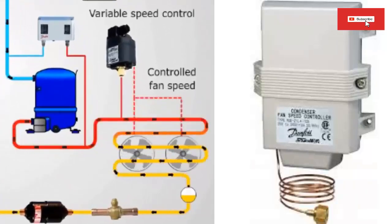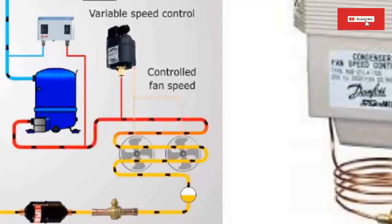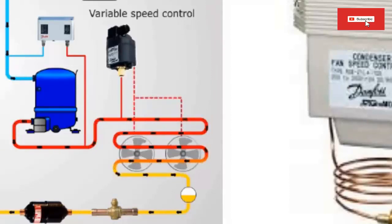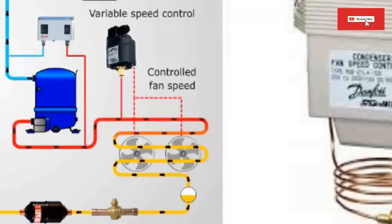Variable Speed Control, or VSC, is a technology that can be used to improve the efficiency and performance of condenser fans. The VSC allows the fan to run at different speeds depending on the needs of the HVAC system.